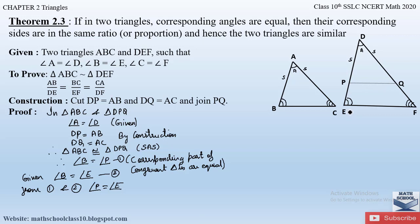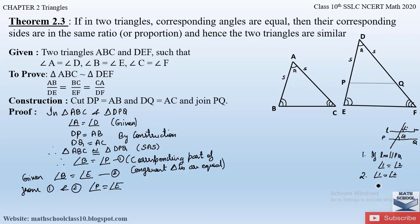Recall from previous classes: if two lines are parallel and a transversal passes through them, the corresponding angles are equal. Conversely, if the corresponding angles are equal, then the two lines are parallel. So if LM ∥ PQ then angle 1 = angle 2, and if angle 1 = angle 2 then LM ∥ PQ.